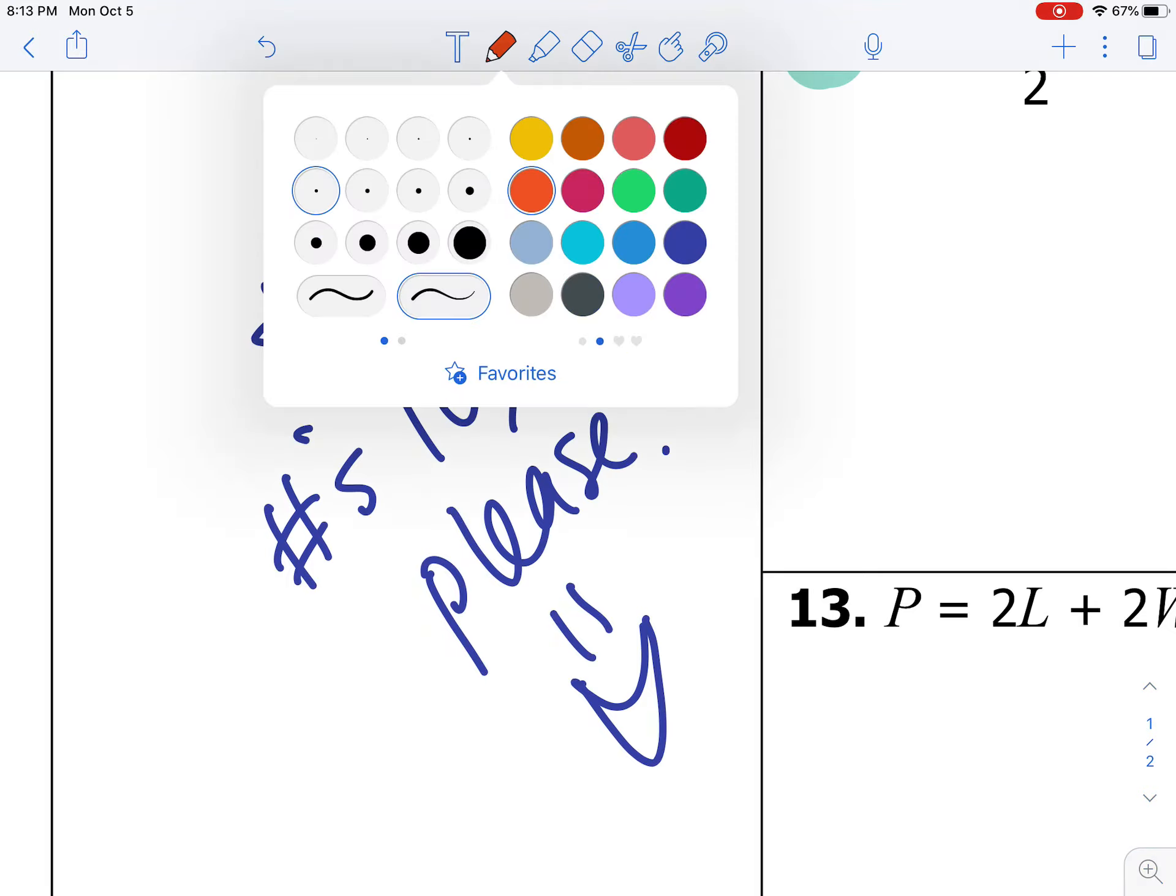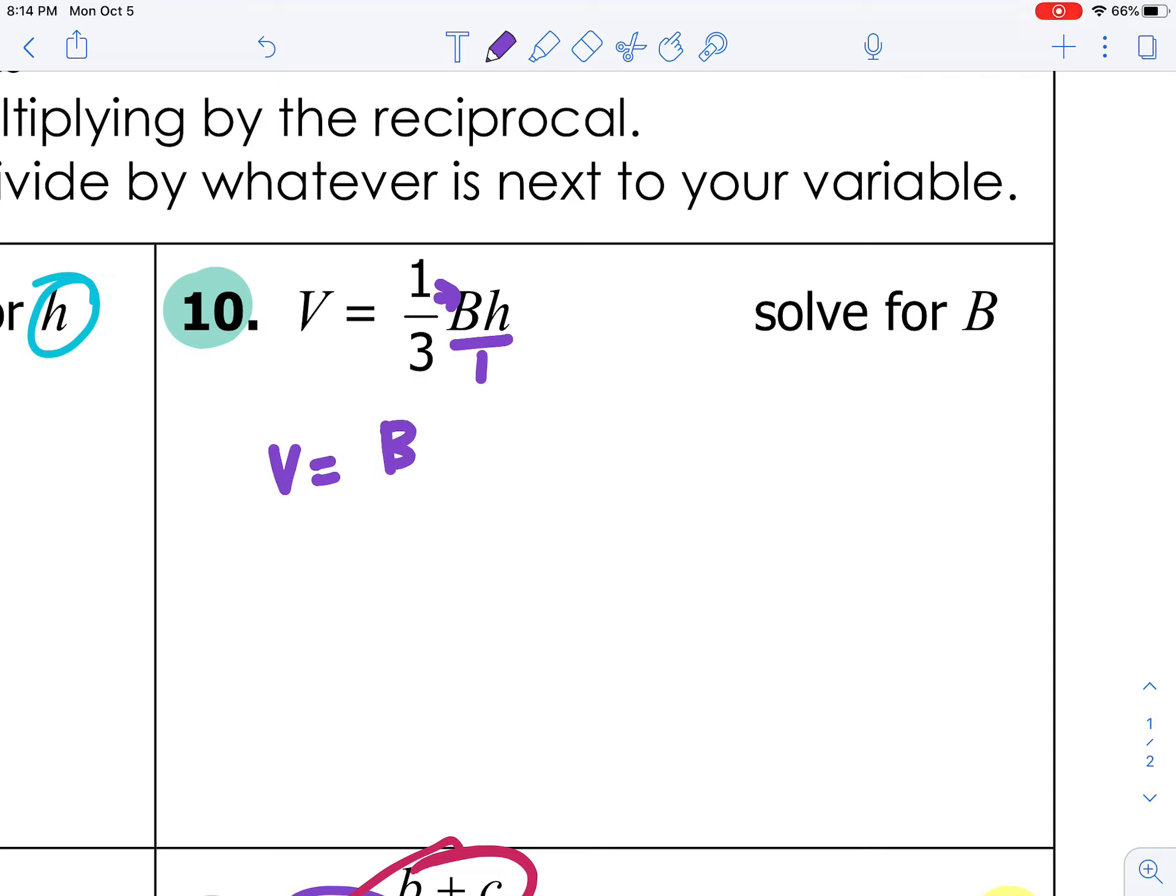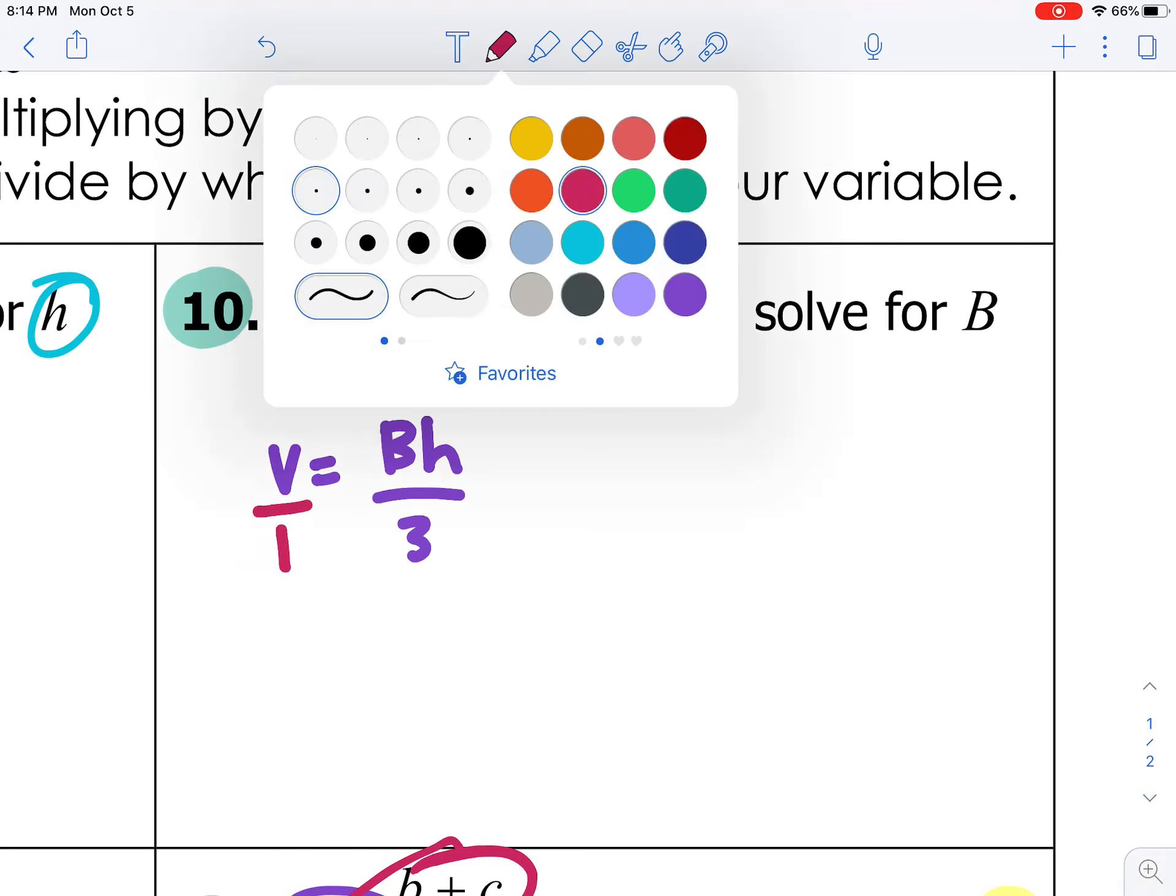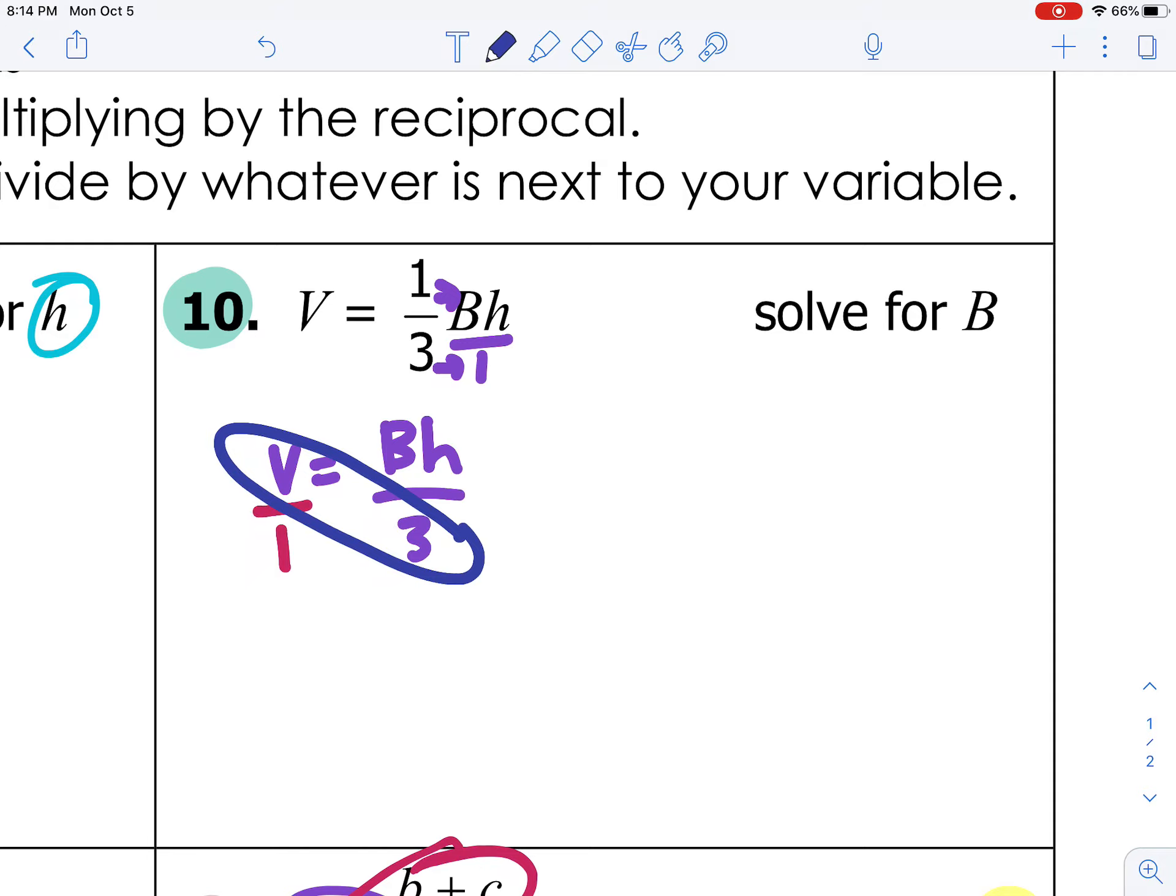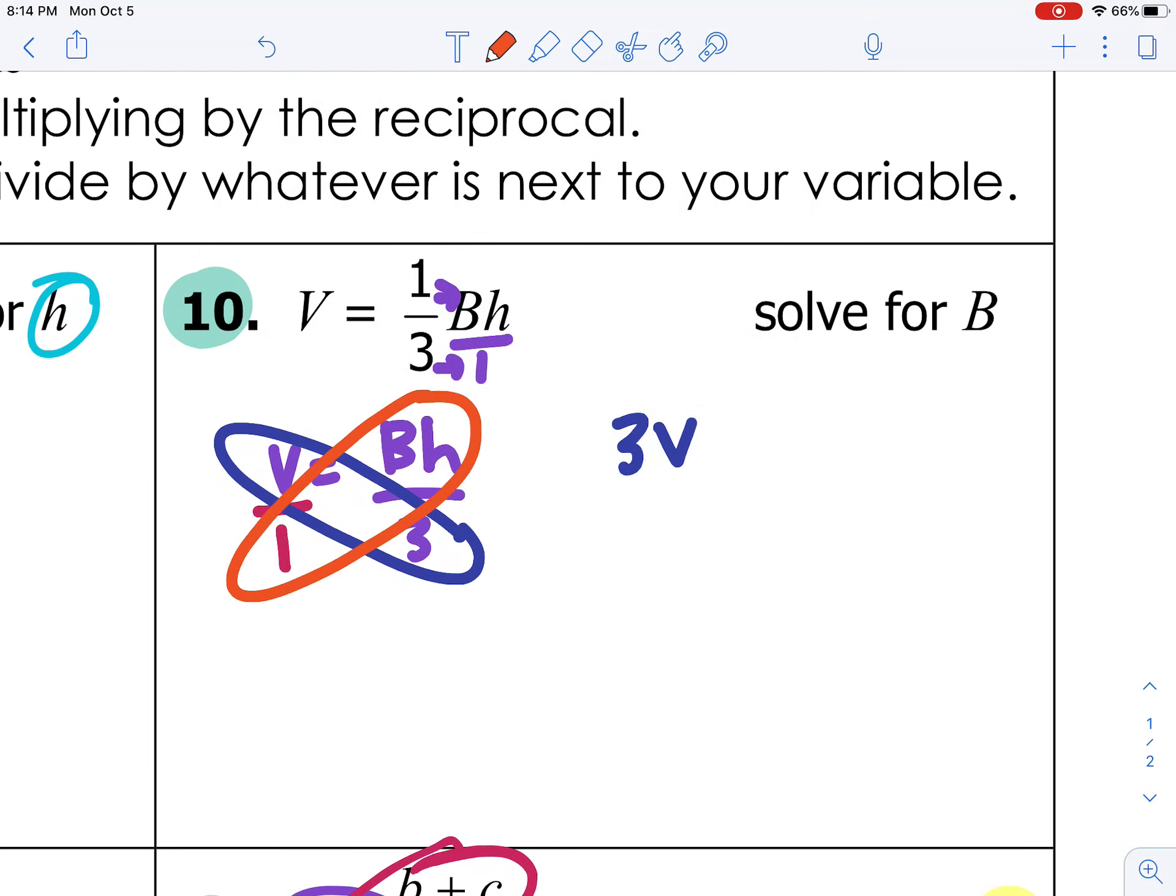So starting with number 10, looking back at number 9, number 10 is very similar to number 9. What we can do is put BH over 1. So then we have V equals 1 times BH is just BH. 3 times 1 is 3. So once I've done that on the right-hand side, if I put the V over 1 on the left-hand side, then I can cross-multiply. 3 times V is 3V.